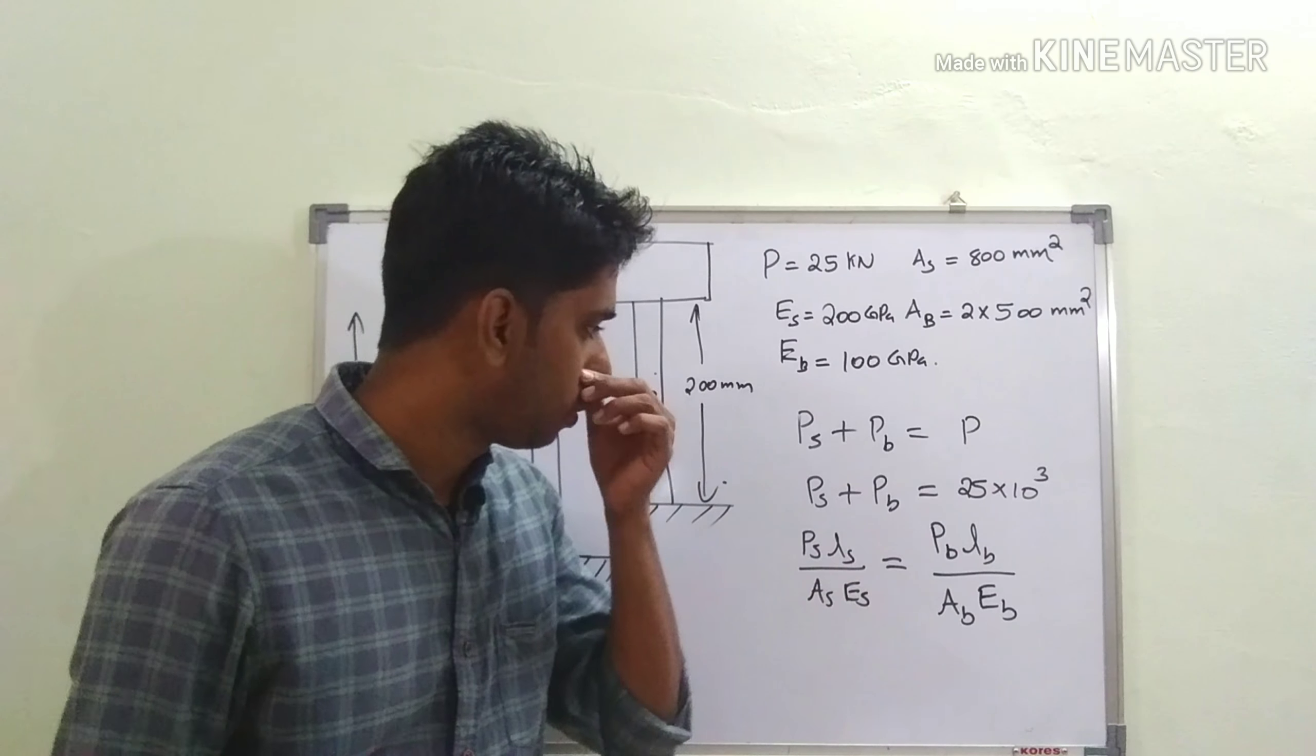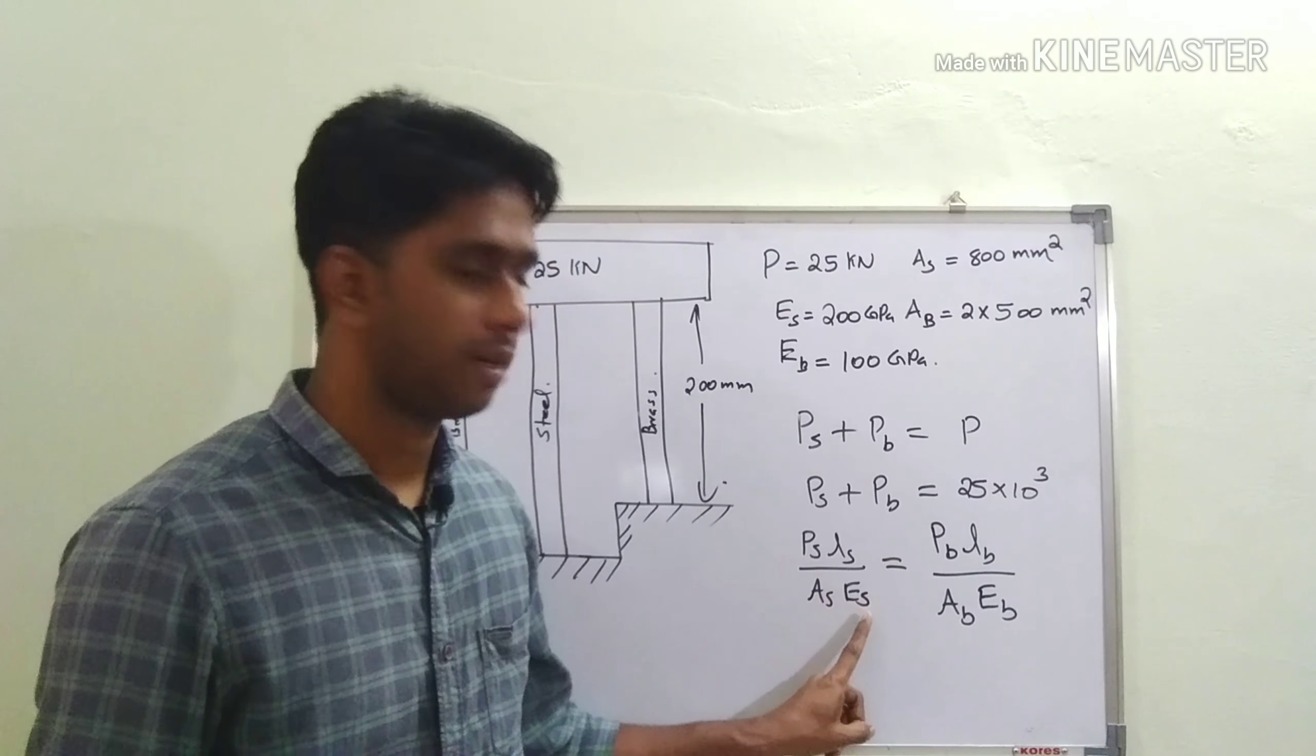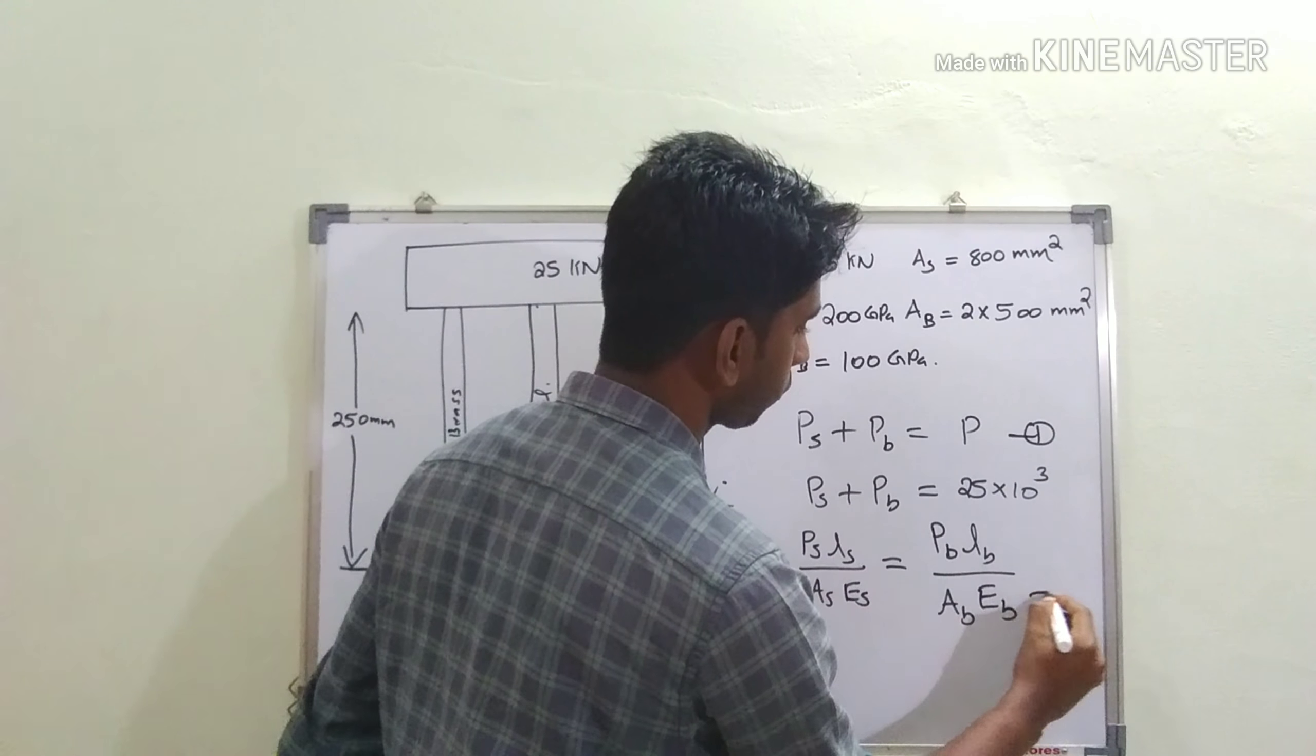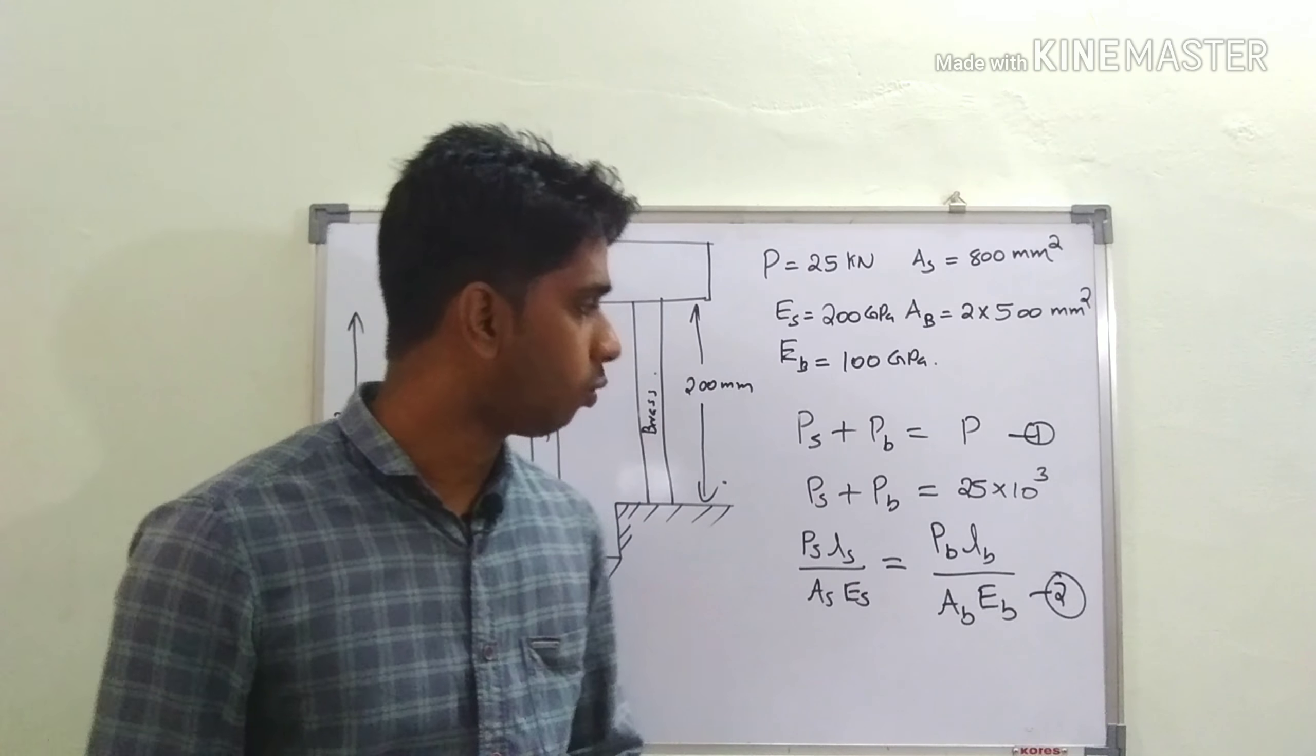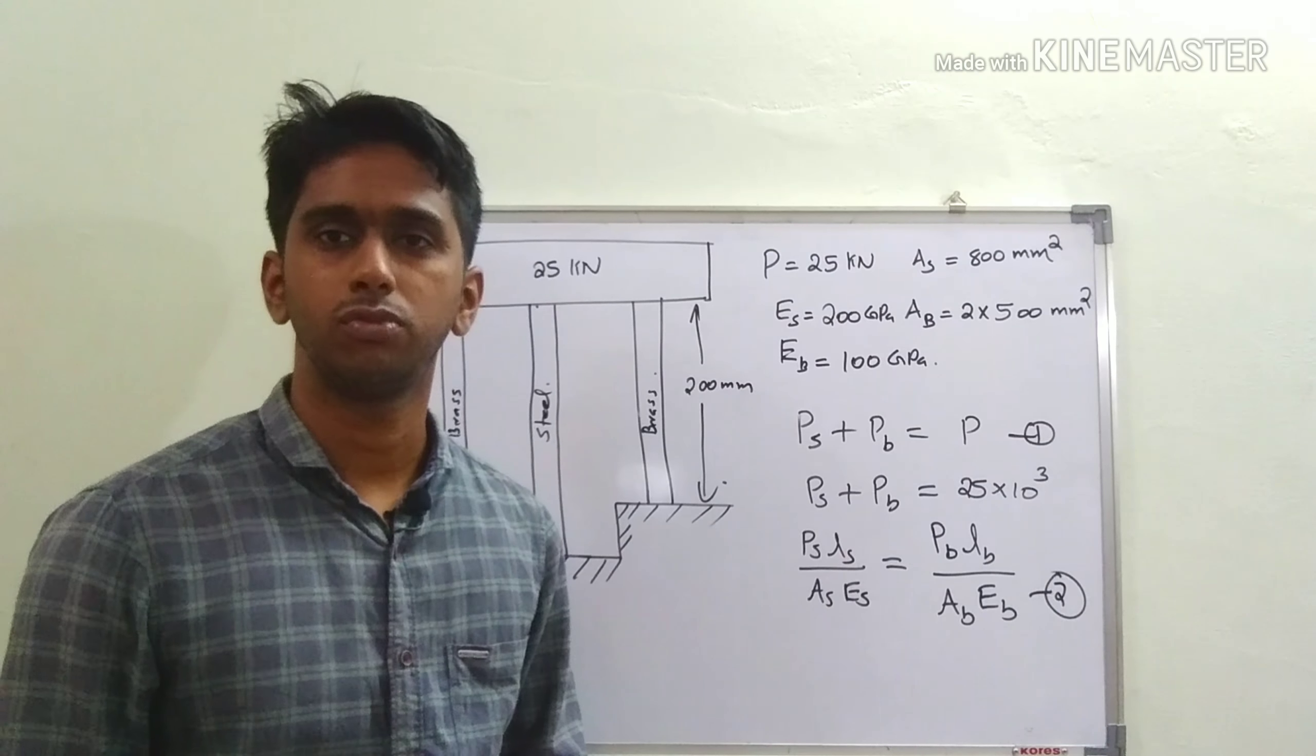We have two equations here: equation one and equation two. Now what you do is solve these equations using a calculator. These are two equations with two unknowns; you can easily solve them.